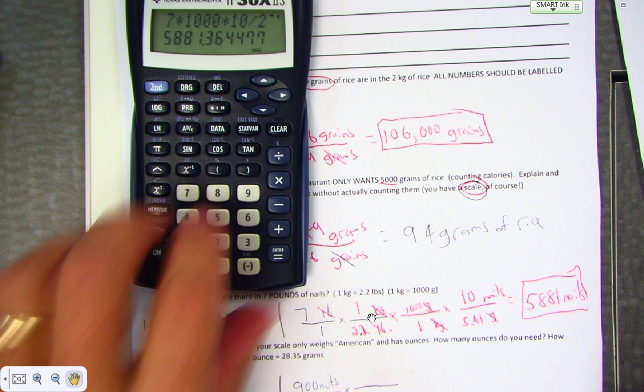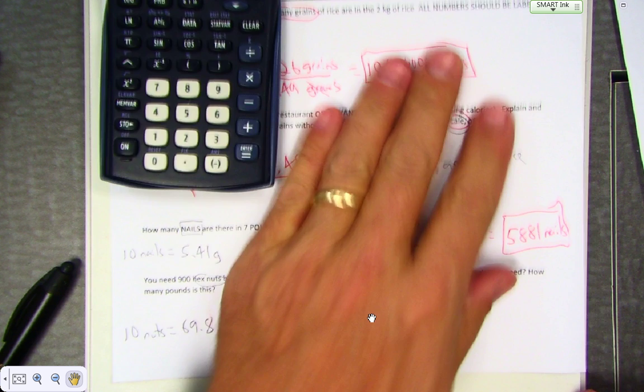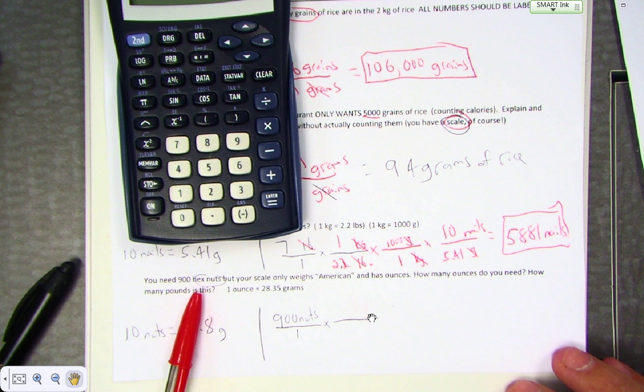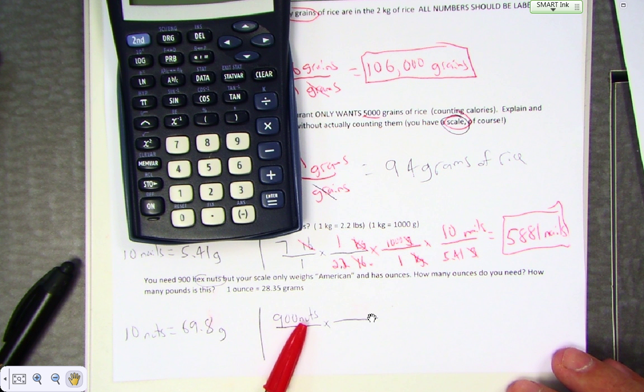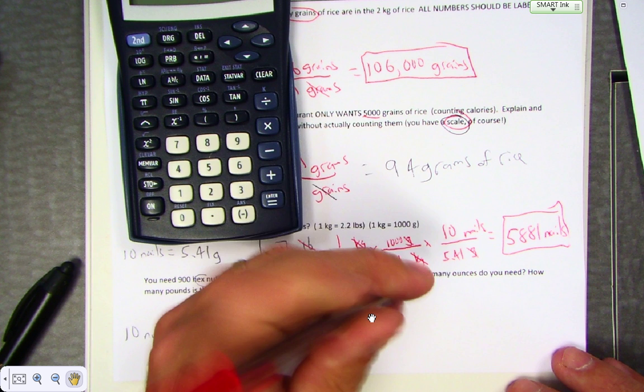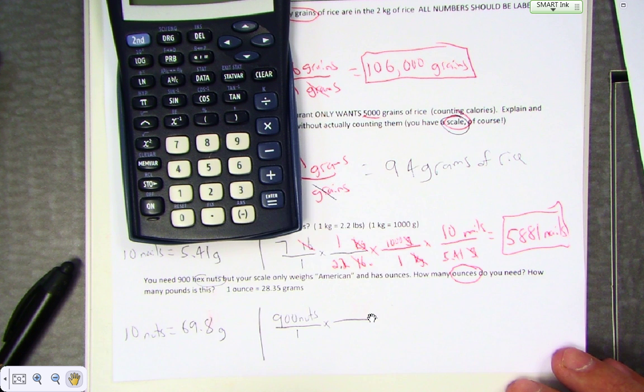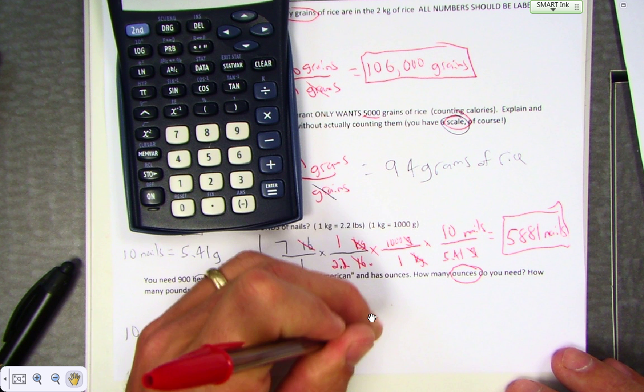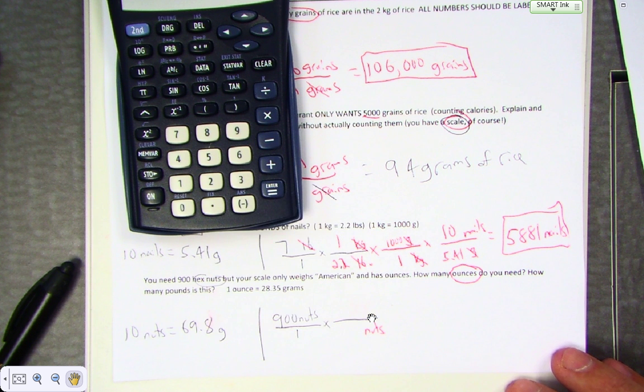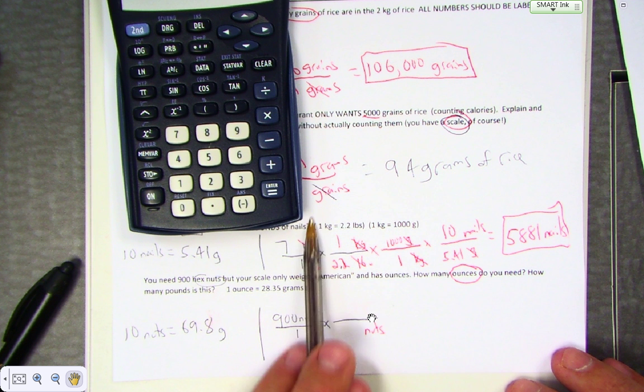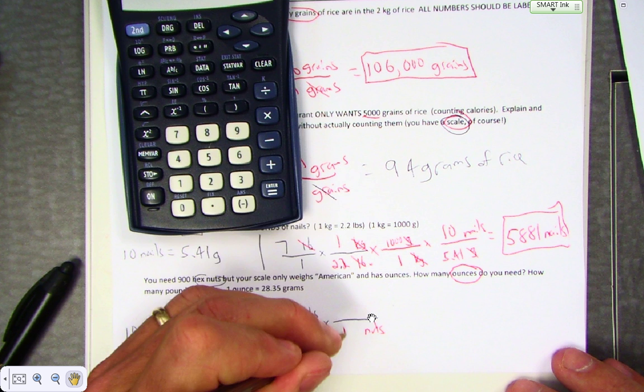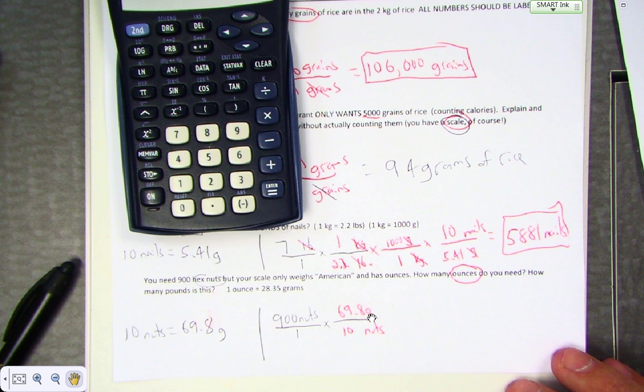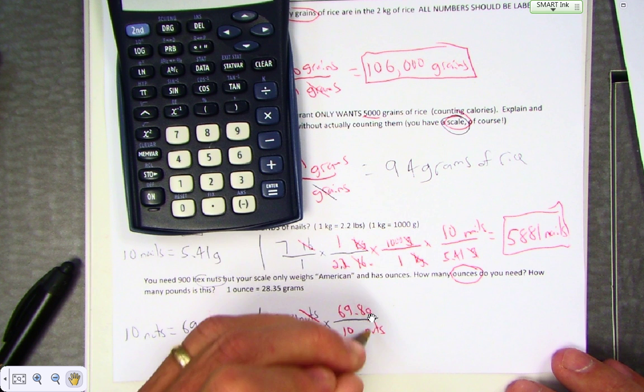The next one, similar idea. The idea is you need 900 hex nuts. Whatever number they start with, I start with that number: 900 nuts. I put it over one, but your scale only weighs American and has ounces. How many ounces? So I need to figure this out. I need to keep crossing things out until all I have left is ounces. Right now I got nuts on top. Nuts has to go on the bottom. What do we know about how many nuts? The only fact on this page about nuts is that 10 nuts is equal to 69.8 grams. That will let me cross off nuts and nuts.